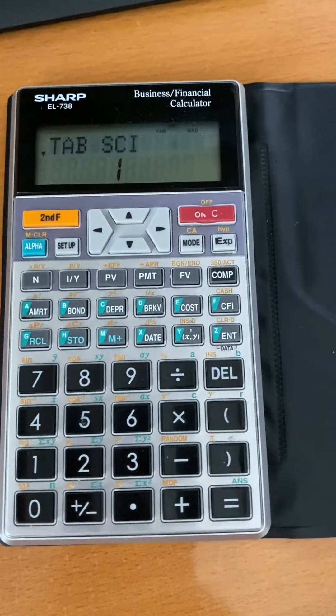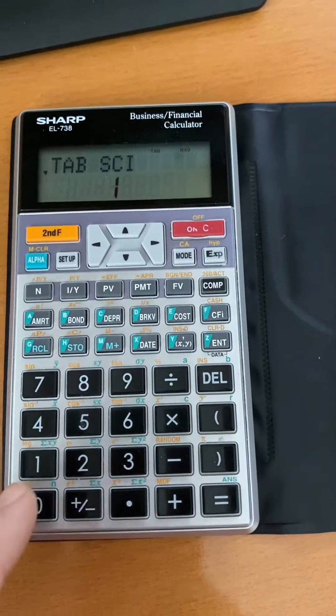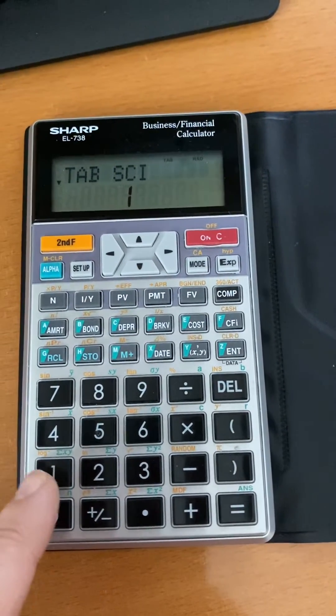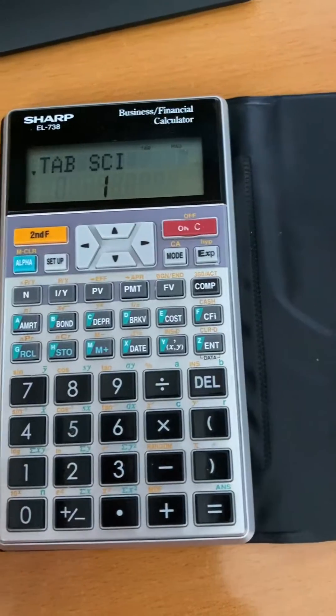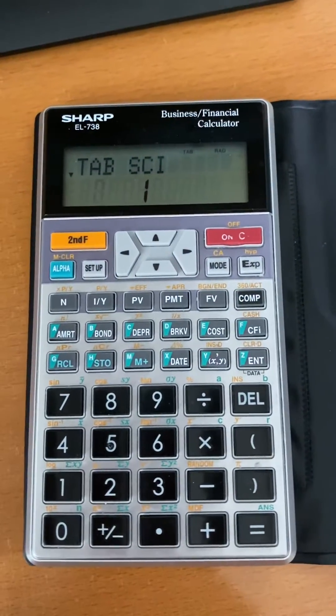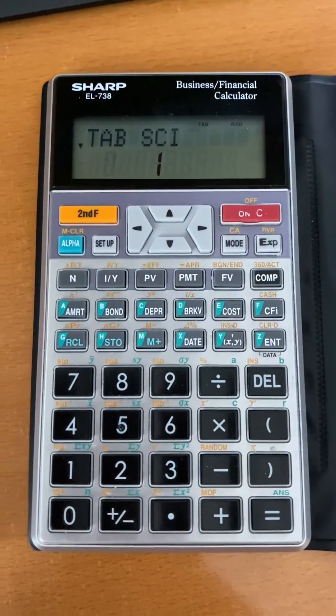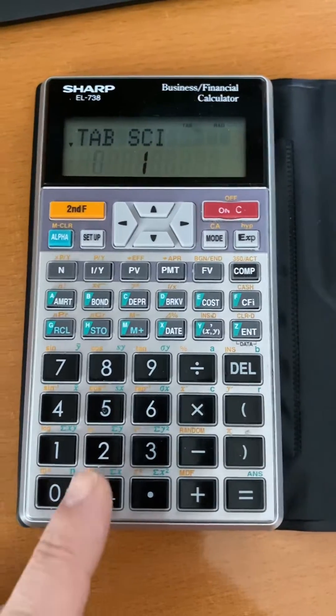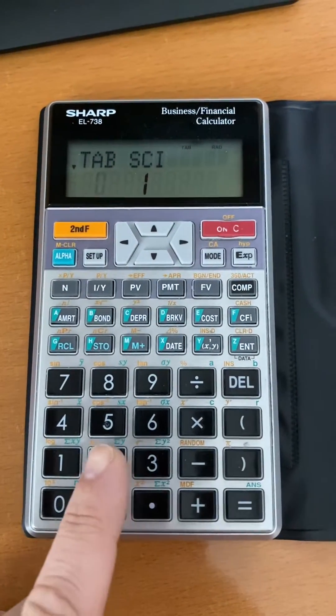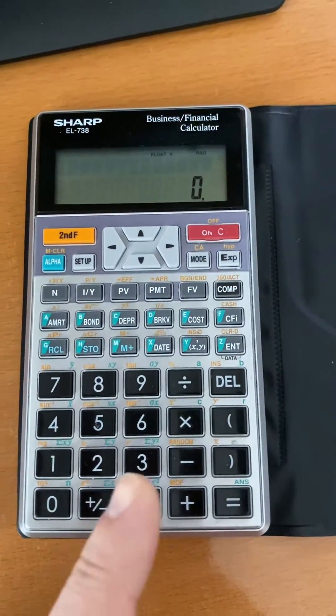One goes to scientific format, which I'm not doing for financial purposes. I use this primarily for financial calculations. For this one, press two, and that's done.